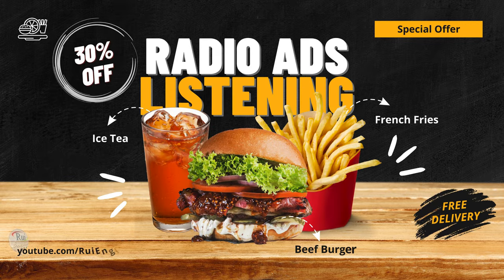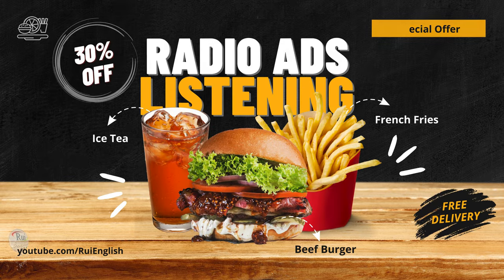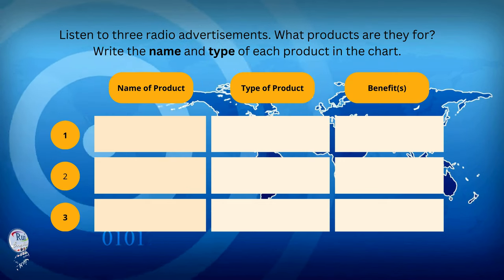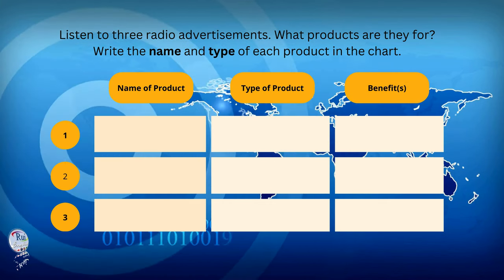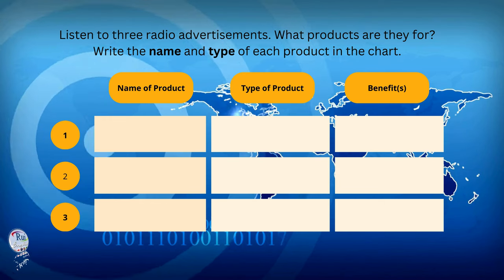Radio ads. Listen to three radio advertisements. What products are they for? Write the name and type of each product in the chart.